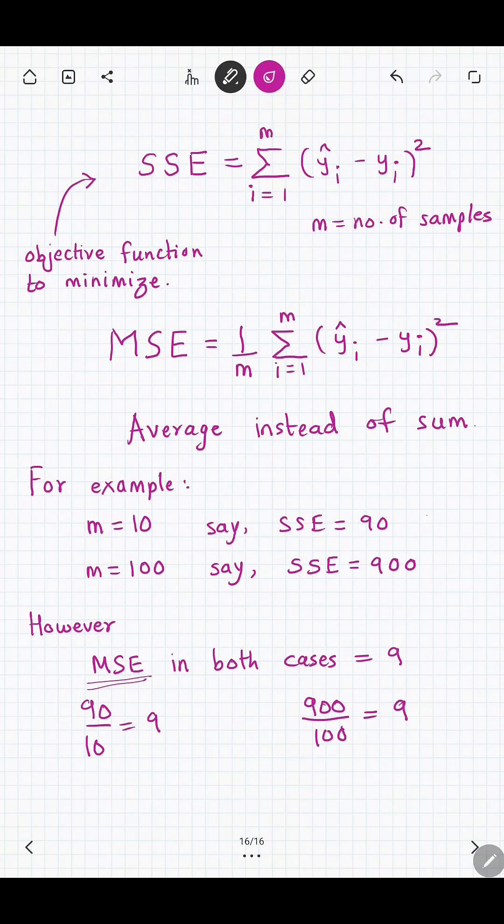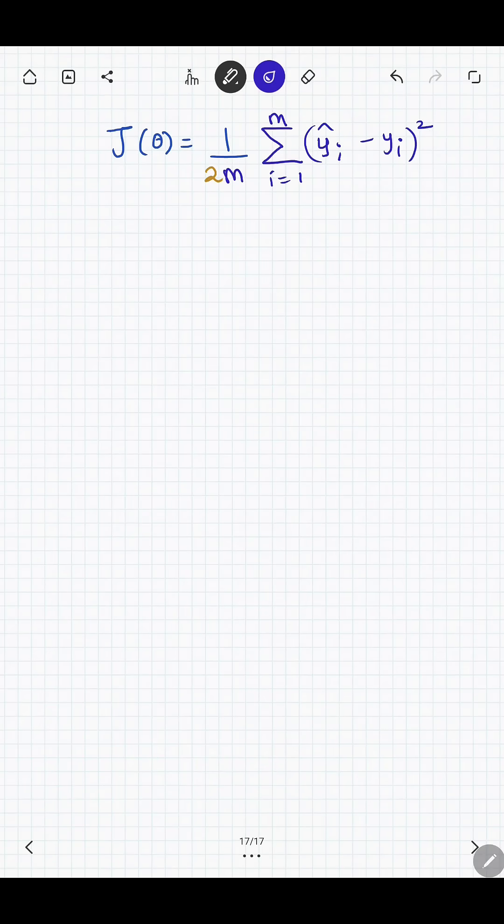Now then you often see a further factor of half. So you often see J(θ) written as 1/(2m), summation i goes from 1 to m, (ŷᵢ - yᵢ)².